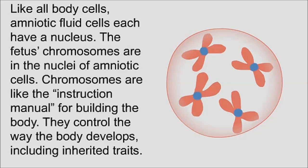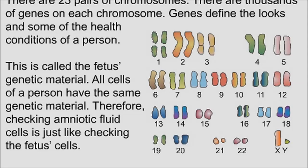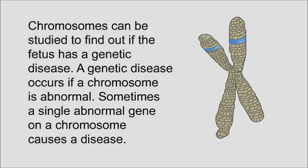Chromosomes are like the instruction manual for building the body. They control the way the body develops, including inherited traits. There are 23 pairs of chromosomes, and there are thousands of genes on each chromosome. Genes define the looks and some of the health conditions of a person — this is called the fetus's genetic material.